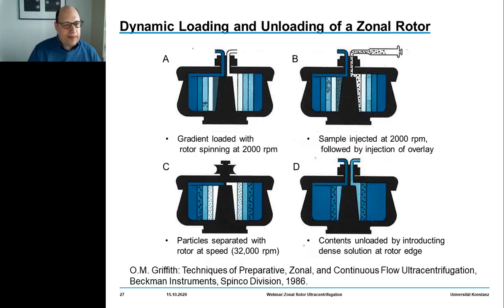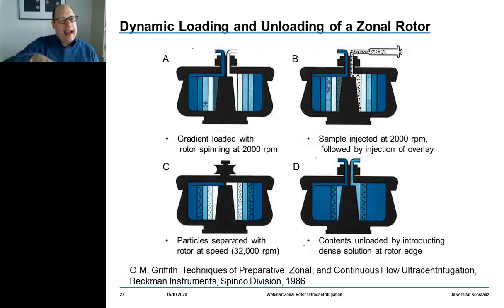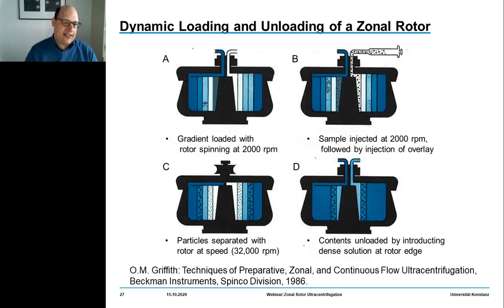Now let's explain how dynamic loading is performed. We start by spinning the rotor at a reduced rate of about 2000 RPM, then begin pumping in the lightest part of the gradient to be built within the rotor chamber. This portion of fluid is pumped towards the edge of the rotor, and this fluid layer will be displaced by layers of next higher densities until the gradient is fully loaded.